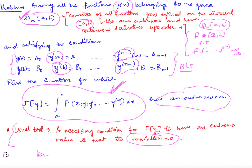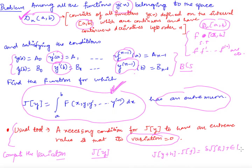Our task is to compute the variation. Recall that for a functional J[y], the variation is found by computing the increment J[y+h] − J[y], which equals the variation term plus ε·‖h‖ where ε → 0 as ‖h‖ → 0. So we have to compute J[y+h], where h is the increment function.